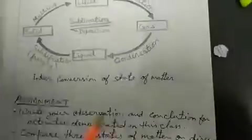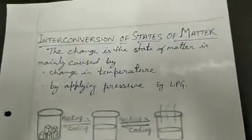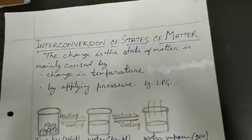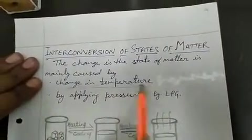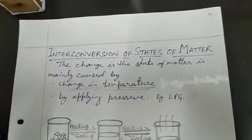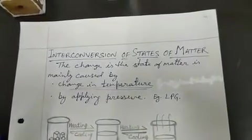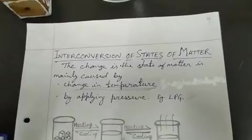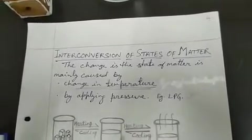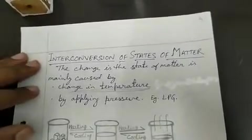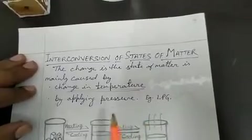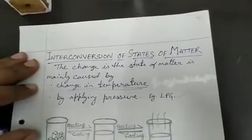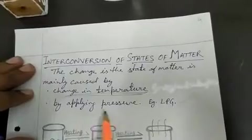Going for the next one: interconversion of states of matter. There are two ways by which we can do it. By changing the temperature—why? Because we know that by changing temperature their kinetic energy can be reduced. If their energy is reduced, easily you will find that they will not move away faster, and by the force of attraction they will come together and they will be converted to the state of lower energy.